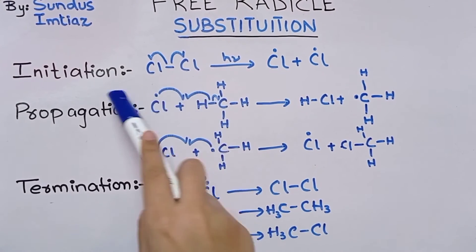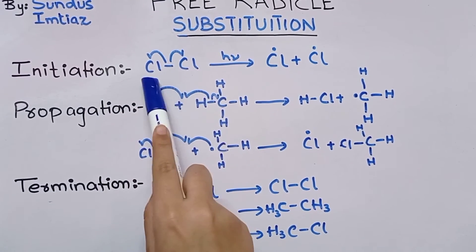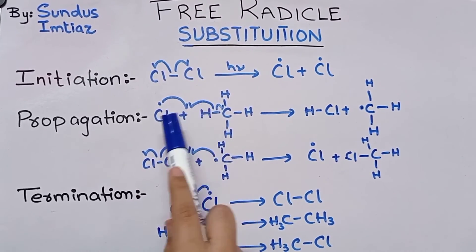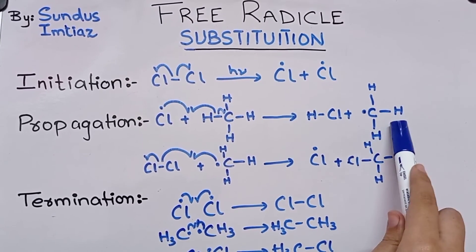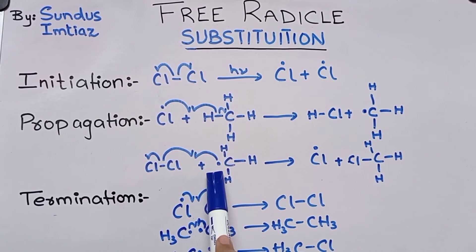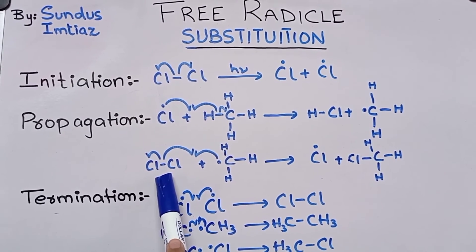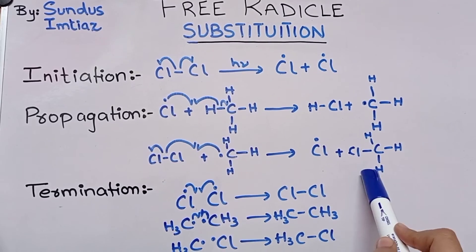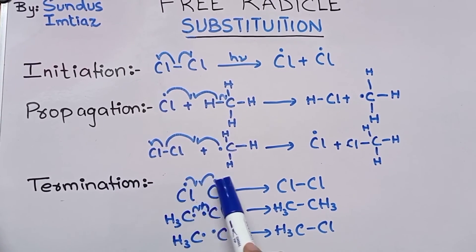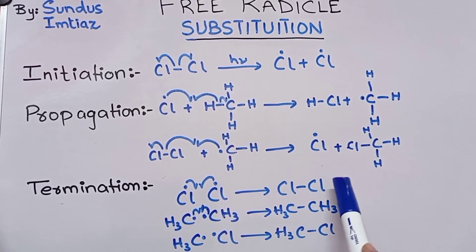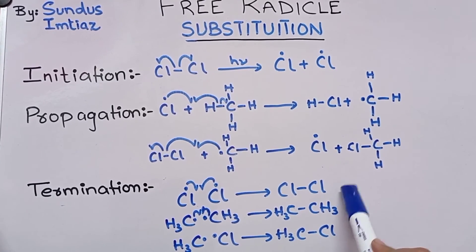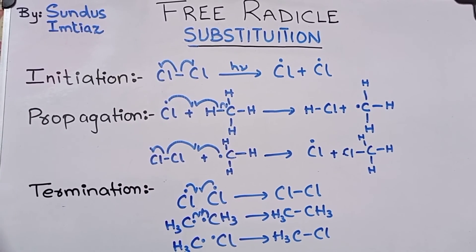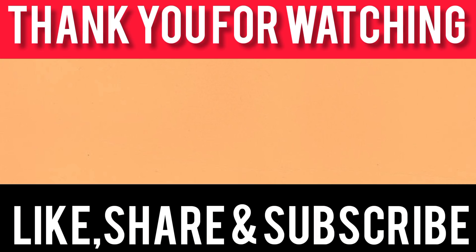In summary: in the initiation step, the halogen molecule breaks down into free radicals. This free radical takes a hydrogen with it and forms an alkyl free radical. The alkyl radical then combines with a halogen molecule to form a substituted alkane and produces another free radical. In the termination step, unpaired electrons pair up and stop the reaction — no more radicals, no more chain reactions.